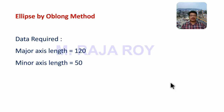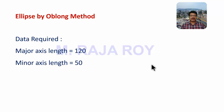Ellipse by the Oblong method. The Oblong method is a special method for drawing an ellipse. After reading the problem, if the given data is major axis length and minor axis length, then you can choose this method. If the given data is eccentricity and distance between directrix and focus, you can go for the general method.